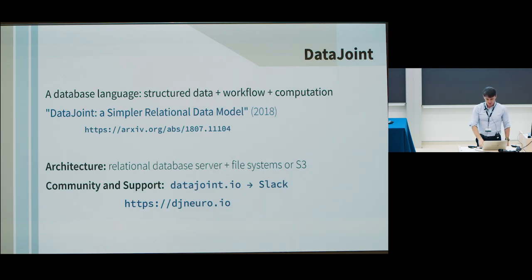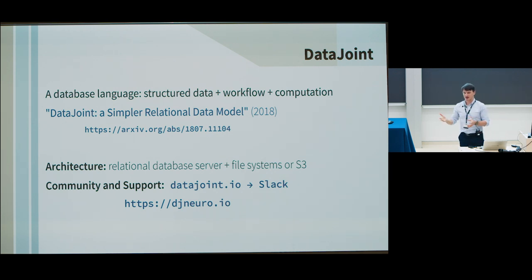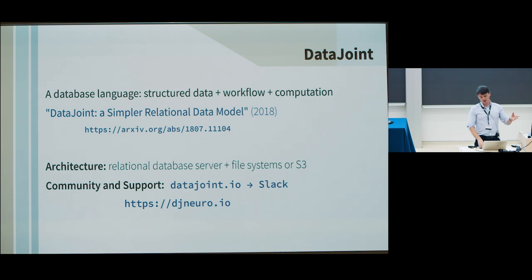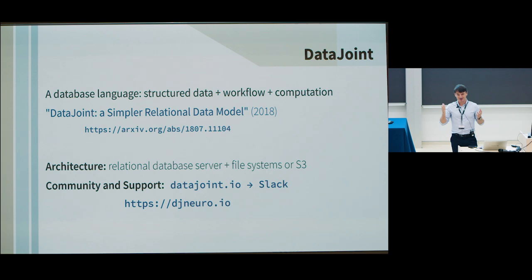DataJoint is a language for programming databases and computation. The architecture underneath is a relational database — we use MySQL for the most part. Plus, to store bulk data, a file system or S3 with Amazon or compatible services like Minio, which you can install on-premises to act as S3. I wrote the first version of DataJoint for my own experiments about ten years ago.